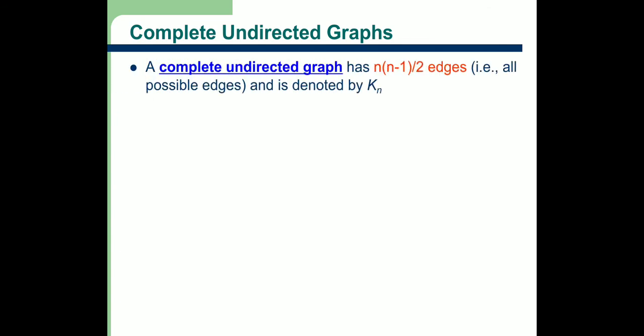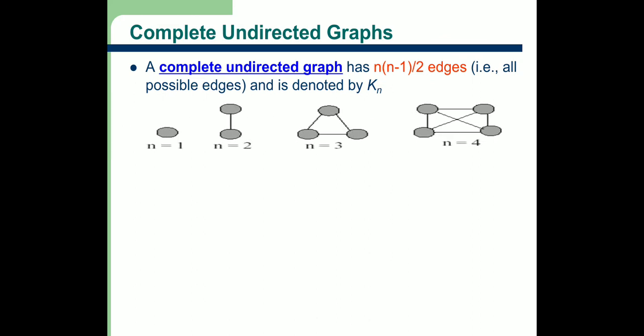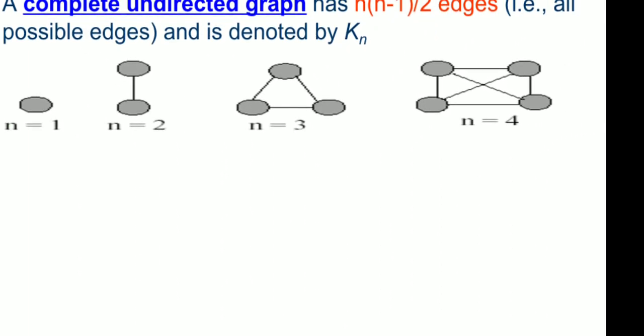Next is the complete undirected graph. A complete graph is one that has the maximum number of edges, n(n-1)/2. We call a graph complete when there is at least one edge between every pair of vertices. For example, when n=1, there are no edges and it is still a complete graph. When n=2, the two vertices are connected. When n=3, each vertex is connected with every other vertex.